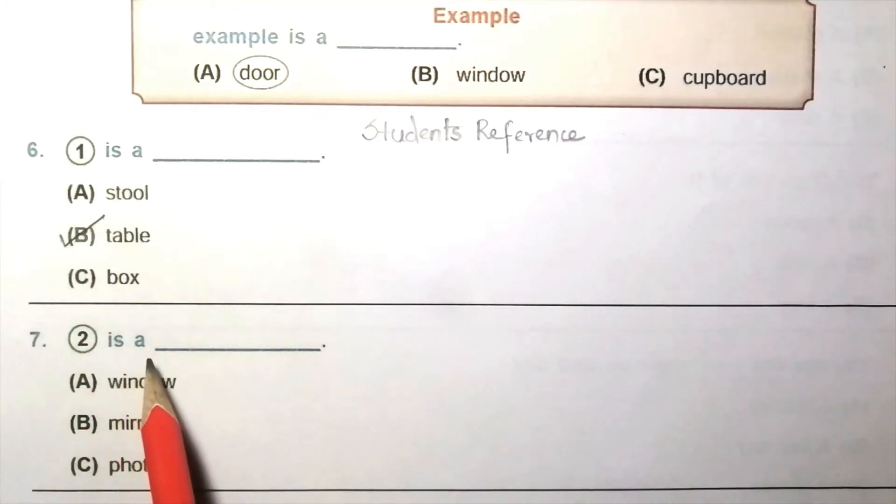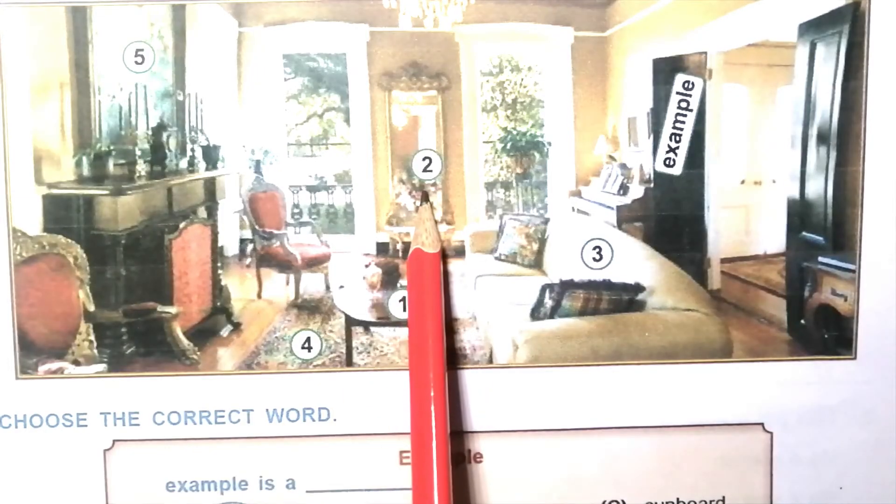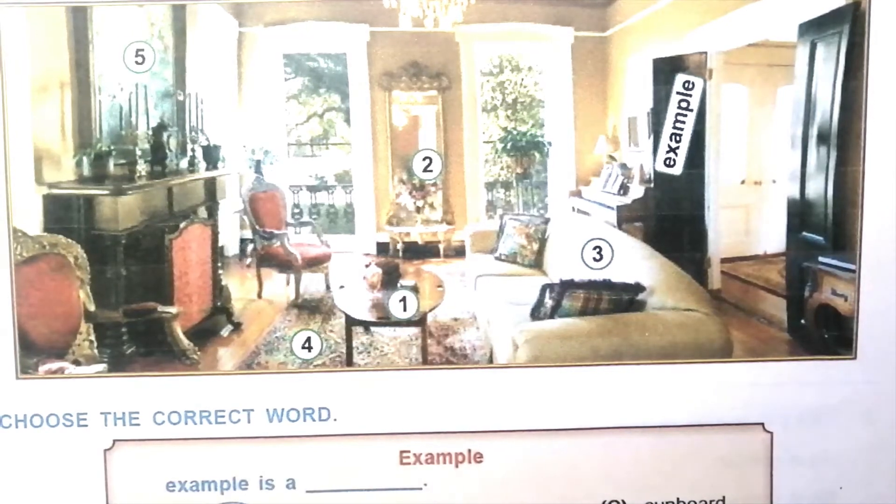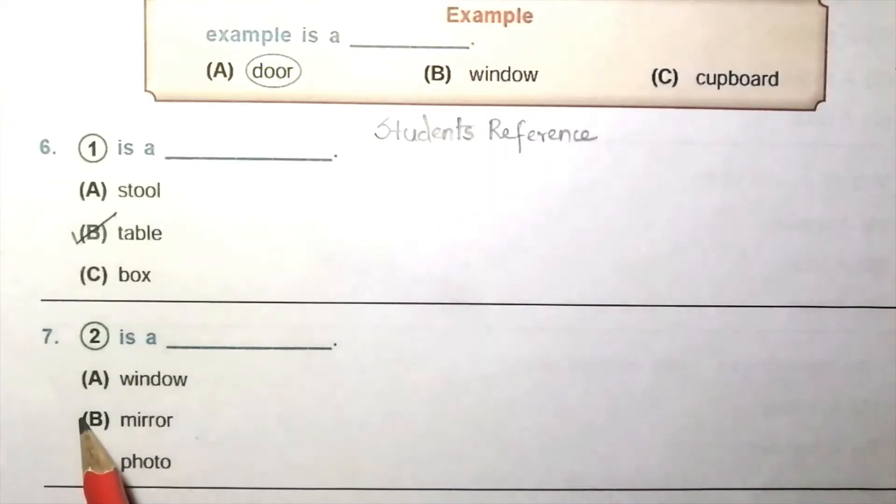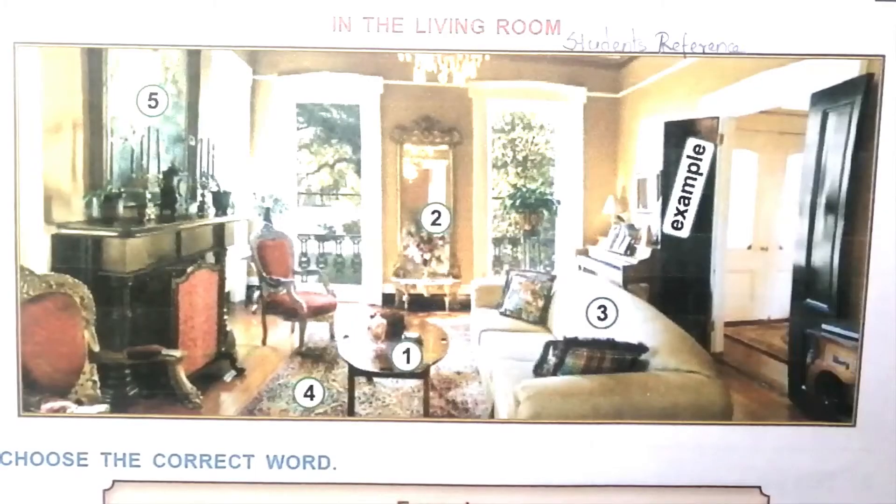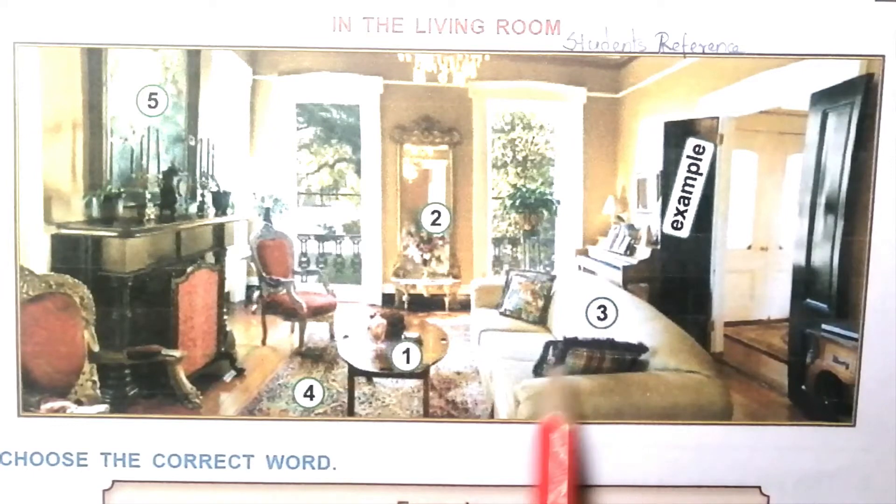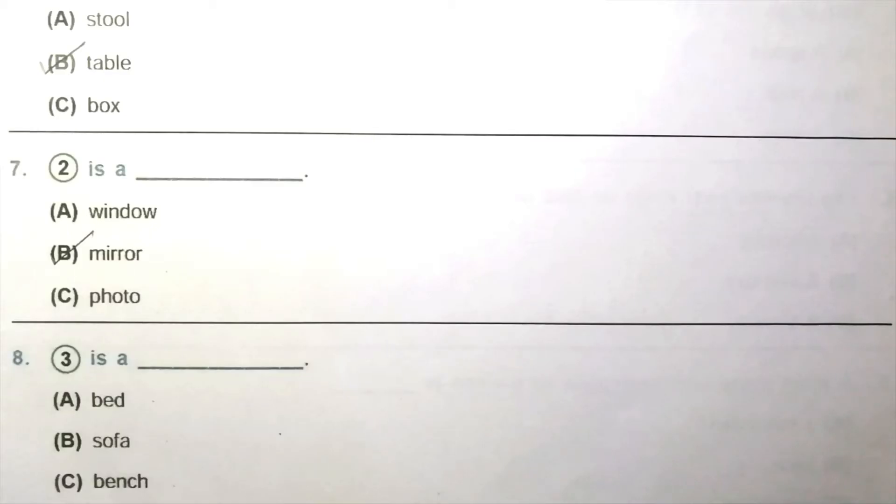Question 7: Two is blank. Window, mirror, photo. The given picture two is a mirror. So the answer is B, mirror. Question 8: Three is blank. Bed, sofa, bench. So in the given picture three is a sofa. The answer is B, sofa.